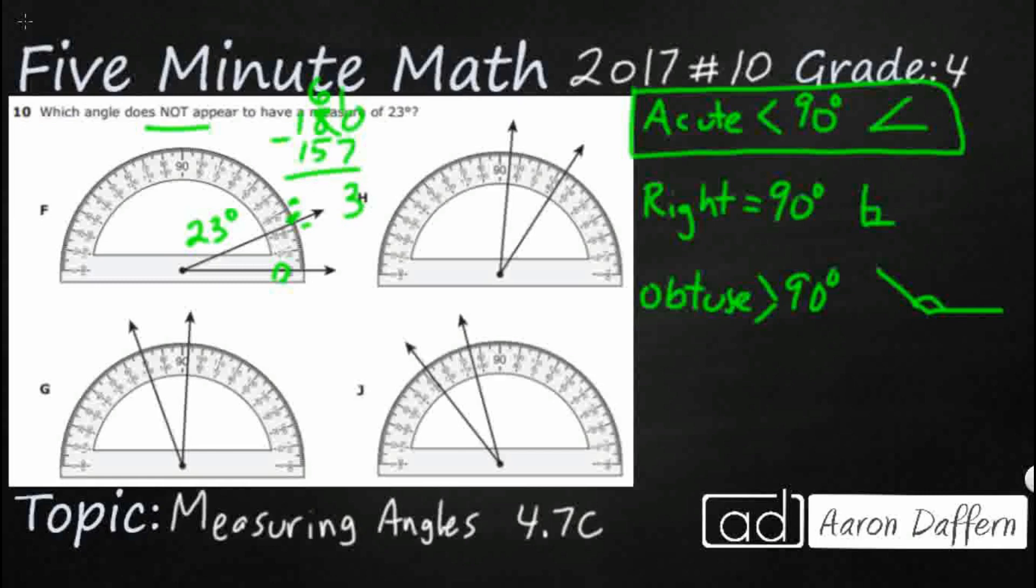Let's see. Let's make sure we borrow correctly. That's 23. So F looks like it's 23. So that gives us an eyeball as to how far apart that should be. So we don't want to choose F. We're looking for the one that is not 23.